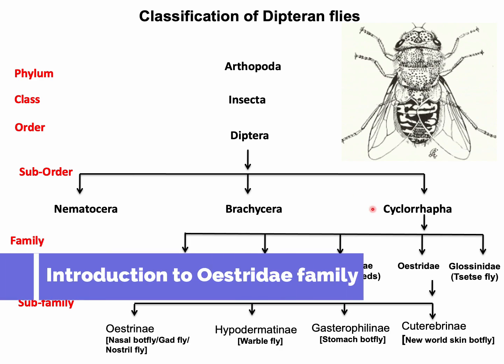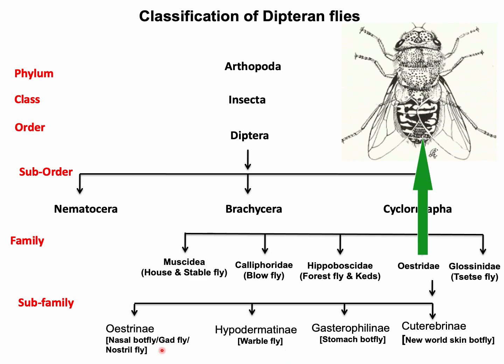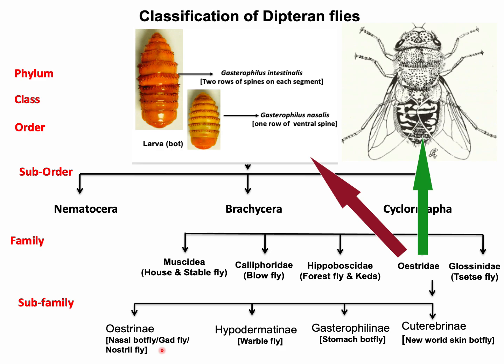This is the zoological classification of different flies. We have studied different veterinary important arthropods under the suborders Nematocera, Brachycera, and Cyclorrhapha. You can see the different important families under the suborder Cyclorrhapha. Flies under the Oestridae family are commonly known as nasal bot fly, warble fly, or stomach bot fly. They are moderately large, bee-like flies with vestigial or primitive mouth parts. Due to rudimentary mouth parts, adult flies cannot feed but can only imbibe fluid. These flies have small eyes located in large intraocular spaces.